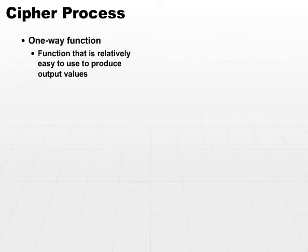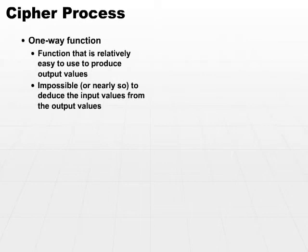In order for these ciphers to work in real life, they need to incorporate something called a one-way function. A one-way function is a generic function that is relatively easy to use to produce output values, but it's impossible, or nearly so, to deduce the input values from the output values. In other words, it's easy to go one way, but very hard to go the other way.